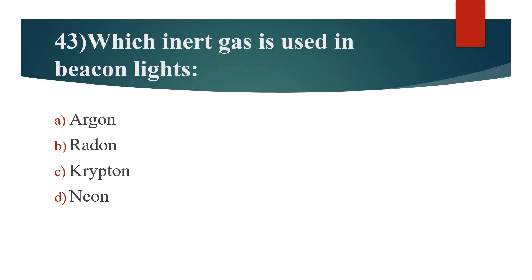Forty-third question. Which inert gas is used in beacon lights? Option A: Argon. Option B: Radon. Option C: Krypton. Option D: Neon. Answer is Option D: Neon.